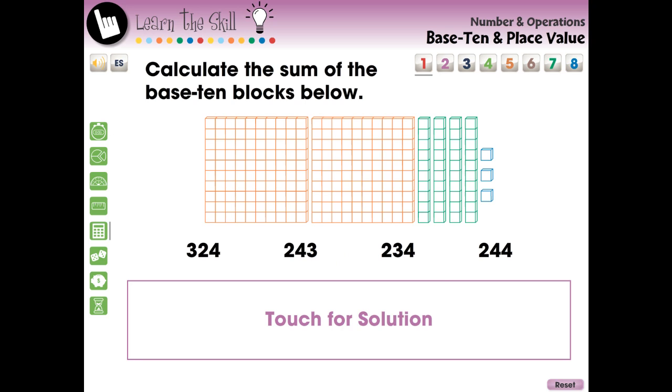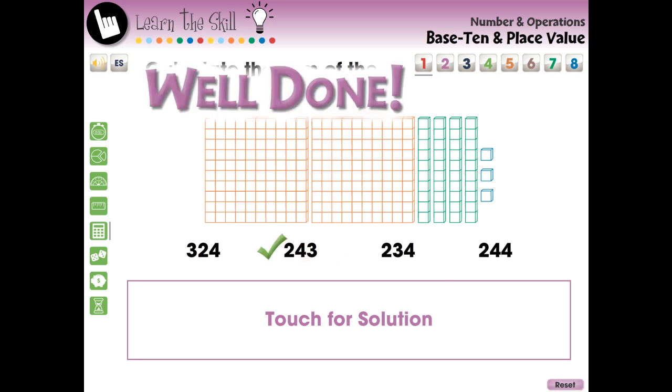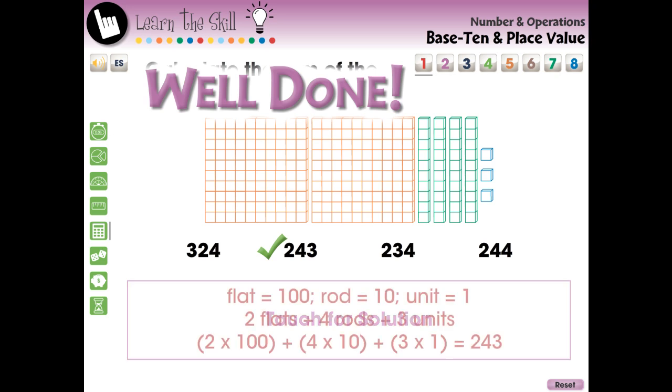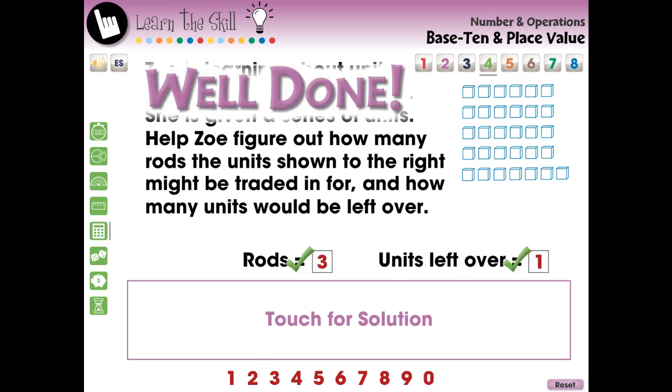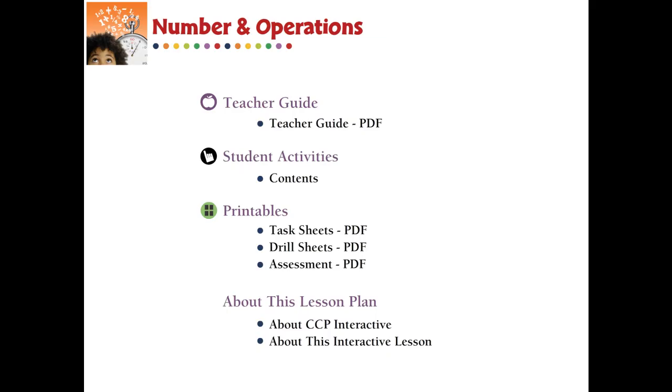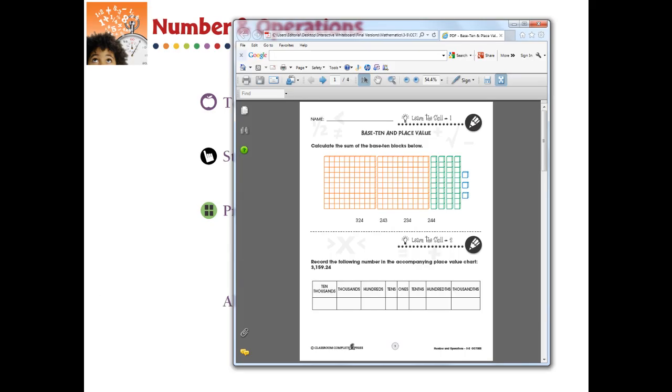The Learn the Skill section contains eight screen pages of real-world task problems. These questions include a touch-for-solution option to give a step-by-step of how the answer is reached. These questions are delivered in the form of fill-in-the-blank and touch questions. Printable PDF versions of the task questions are available at the menu screen.